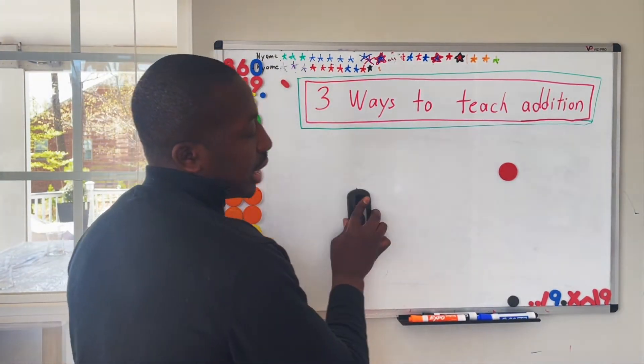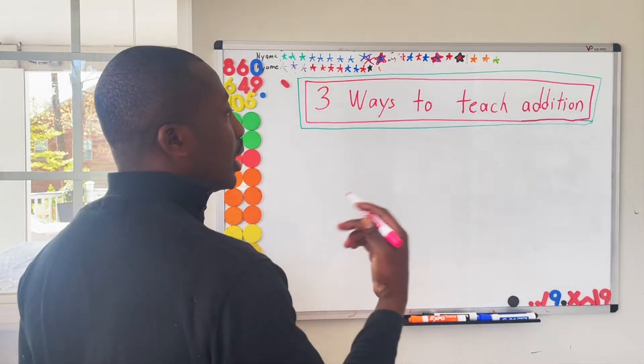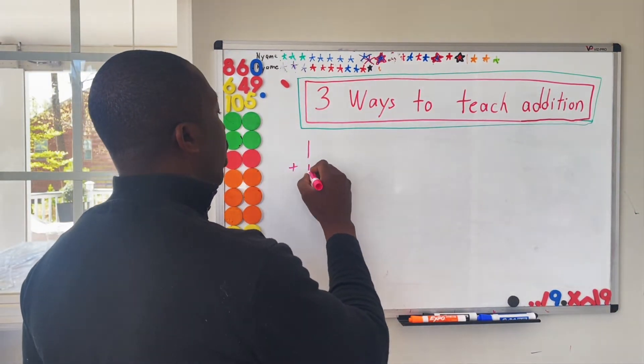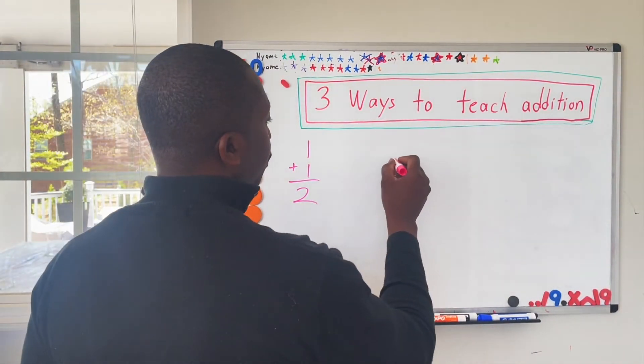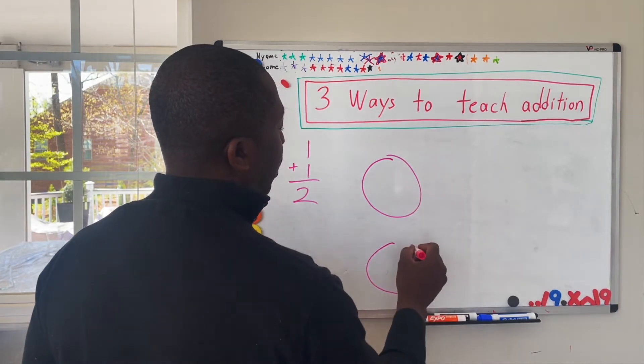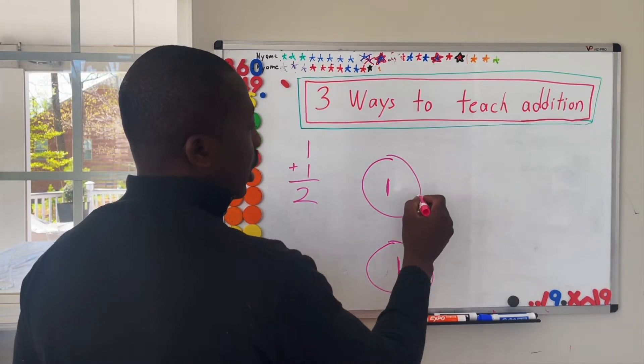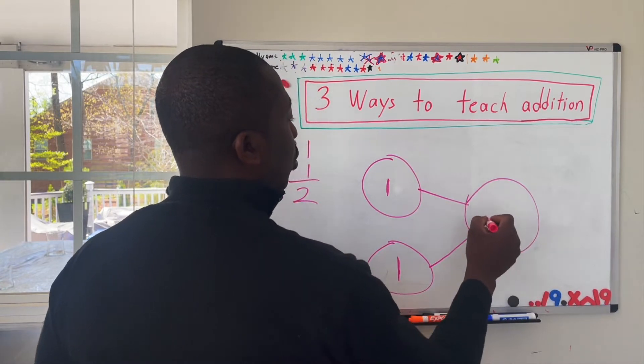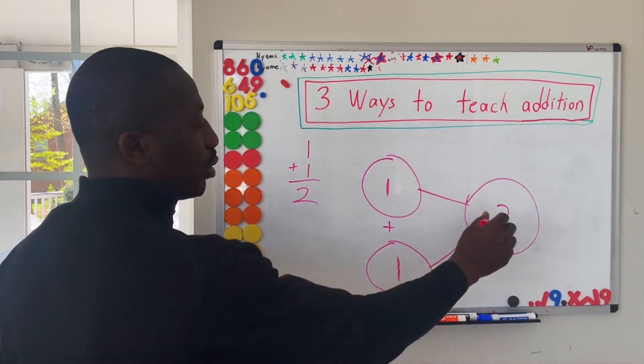A second method that can be taught, and this is oftentimes emphasized, especially in the Singapore math curriculum, is number bonds method. So let's take a problem. One plus one equals two. In this method, the goal is to show that the numbers are interconnected. So you have one here, one there, and when they meet, they're going to equal two. So one plus one equals two.